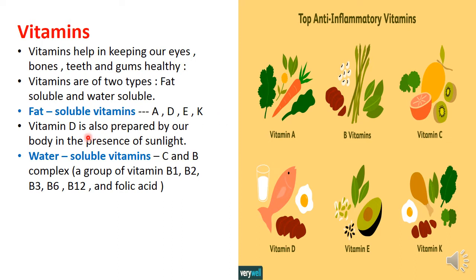Vitamin D is also prepared by our body in the presence of sunlight. Water-soluble vitamins are vitamins C and B complex, which includes B1, B2, B3, B6, B12, and folic acid. Water-soluble vitamins cannot be stored in the body and therefore need to be regularly supplied through food.